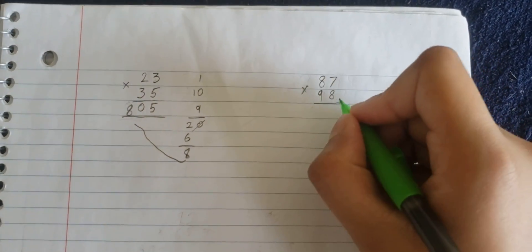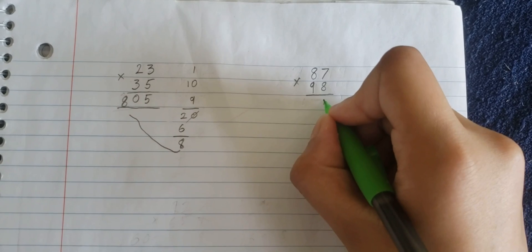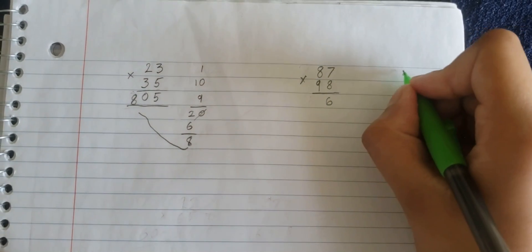First, you multiply the tens, 8, 7, 0, 56, so you write the 6, of course, then 5 here.